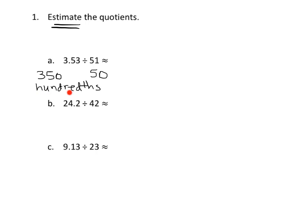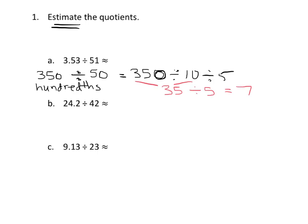So now we have 350 hundredths divided by 50. We can think of that as 350 divided by 10, divided by 5. So 350 divided by 10 is 35, and 35 divided by 5 is 7. Our estimation is approximately 7 hundredths.